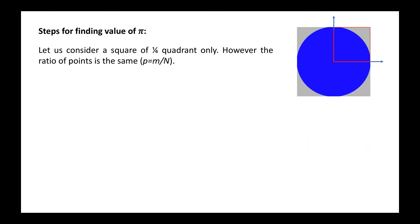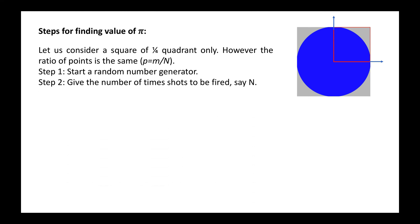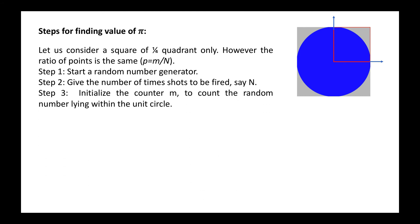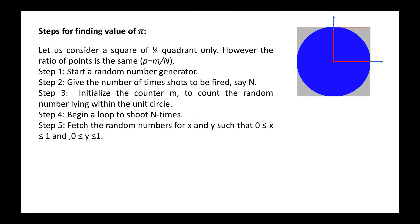For the steps of finding the value of pi, consider only the first quadrant of the square. The ratio of points remains the same, so p = m/n is unchanged. Step one: start a random number generator. Step two: give the number of shots to be fired, say n, then initialize the counter m to count random numbers lying within the unit circle. Step three: begin a loop to shoot n times, fetching random numbers for x and y, each lying between 0 and 1, since we consider the first quadrant only.